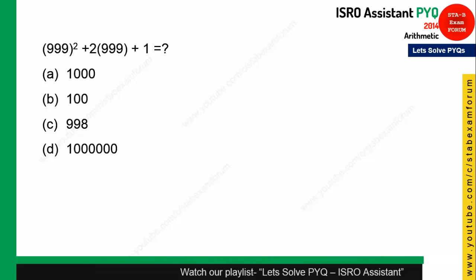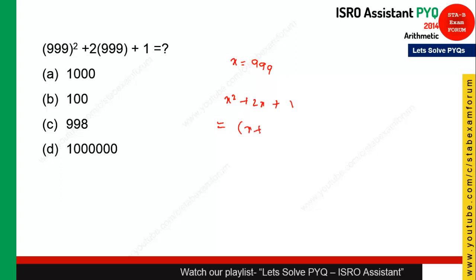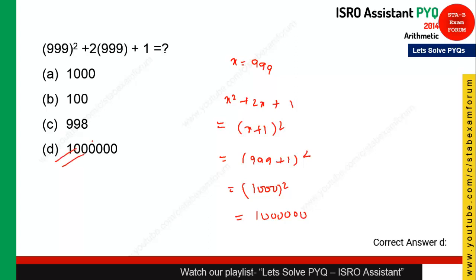This question looks complicated but is very easy. Put x = 999, and the expression becomes x² + 2x + 1 = (x + 1)². With x = 999, that is (999 + 1)² = 1000² = 1,000,000 — six zeros. Option D is the correct answer.